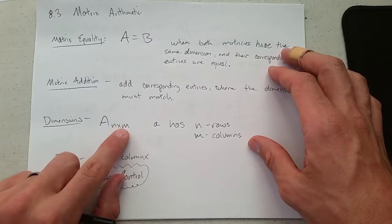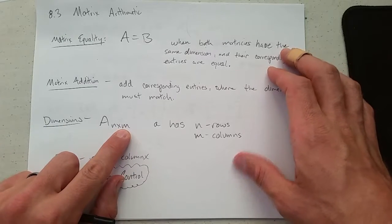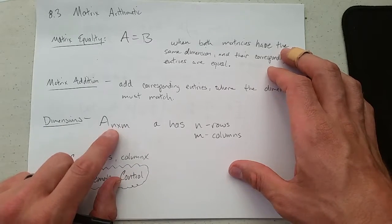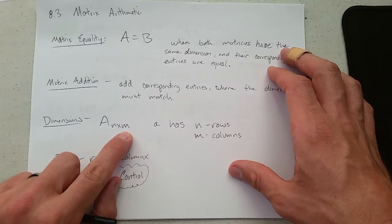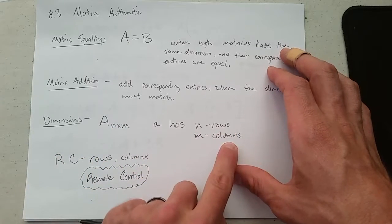So dimensions of a matrix, you have two dimensions. You have rows and you have columns. So if you have A, dimensions N by M, you'd have N rows, M columns.